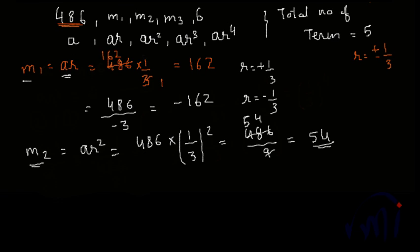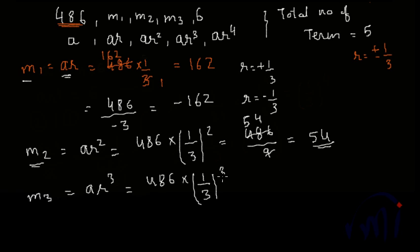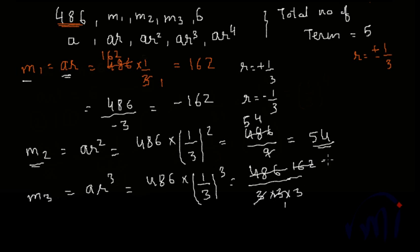Now let's find the value of the third mean, m3 = ar³. Its value will be 486 multiplied by (1/3)³, which is 486 divided by 27. Calculating: 486 ÷ 27 = 18. So when r = +1/3, m3 = 18. When r = −1/3, we get a negative term in the denominator, so the value of the third mean will be −18.